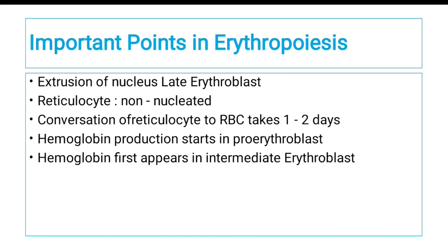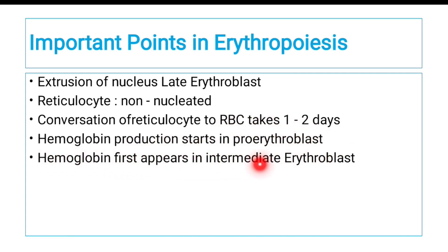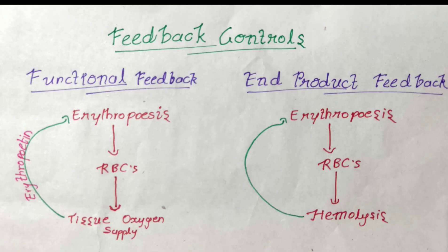Once the late erythroblast stage disappears, it forms reticulocytes, and reticulocytes become RBCs. Important points for your viva: extrusion of the nucleus takes place in the late erythroblast stage; reticulocytes are non-nucleated; conversion of reticulocytes to RBCs takes place within one to two days; hemoglobin production starts in pro-erythroblasts; and hemoglobin first appears in the intermediate erythroblast.